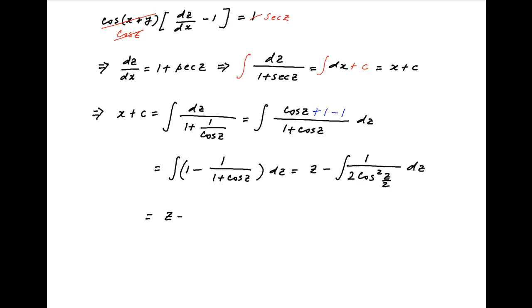The right-hand side equals z minus half of integral of sec square z upon 2 dz. Which equals z minus half of tan z upon 2 times 2.